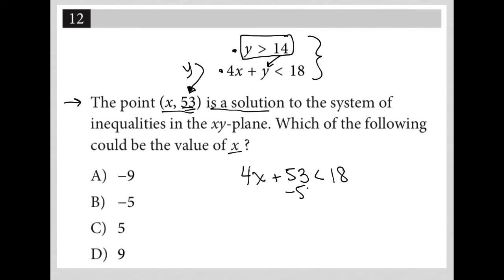So I'm going to subtract 53 from both sides to do that. I have 4x is less than—I'm going to my calculator. What is 18 minus 53? I get negative 35, and I divide by 4, and I get x is less than negative 35 divided by 4, which is negative 8.75.